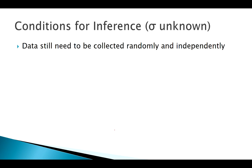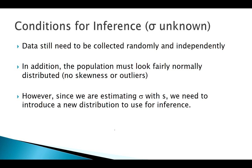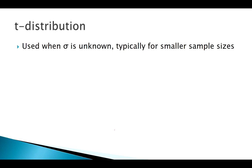When we don't know Sigma, we still need good sampling techniques. We'd like our population to be normally distributed — at the very least fairly symmetric with no skewness and no extreme outliers. Because we're estimating both mu with X-bar and Sigma with S, we're introducing another level of variability. That's where the T distribution comes in.